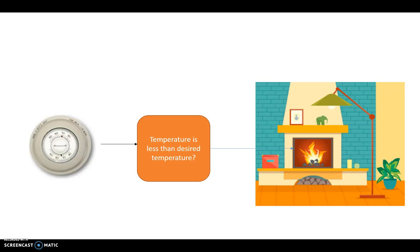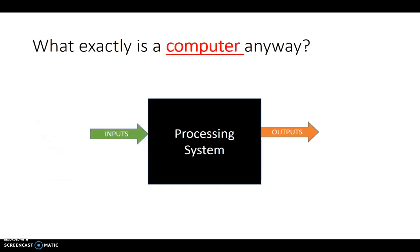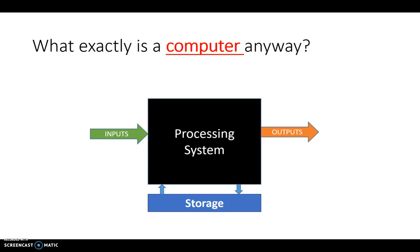Now computers can be a little more complicated than this. For example, computers sometimes need step-by-step instructions on what to do. Again, going back to my cooking example, sometimes when you bake, you follow a series of instructions called a recipe. It's not a single step. It's not simply sifting flour.